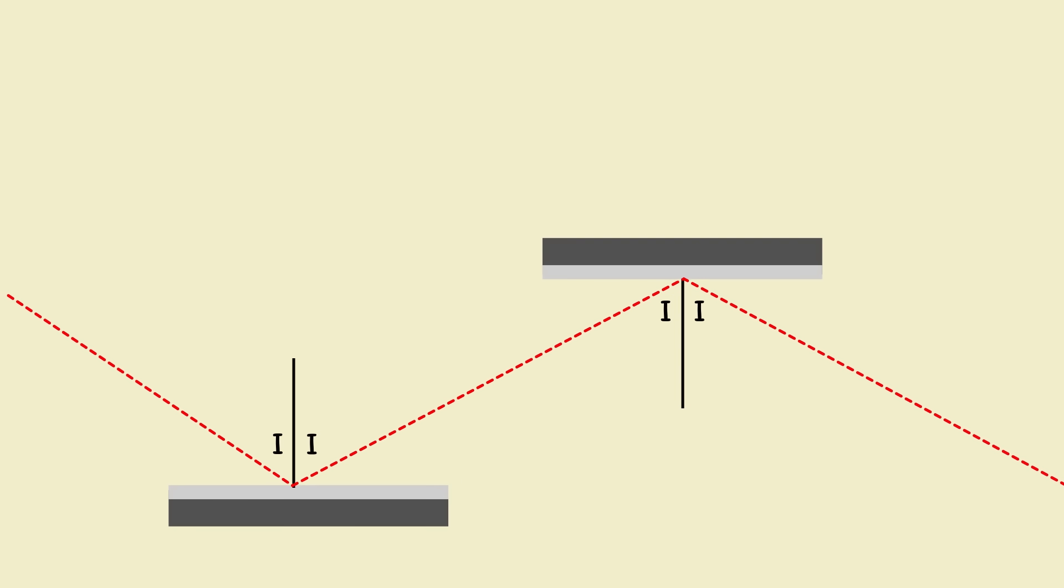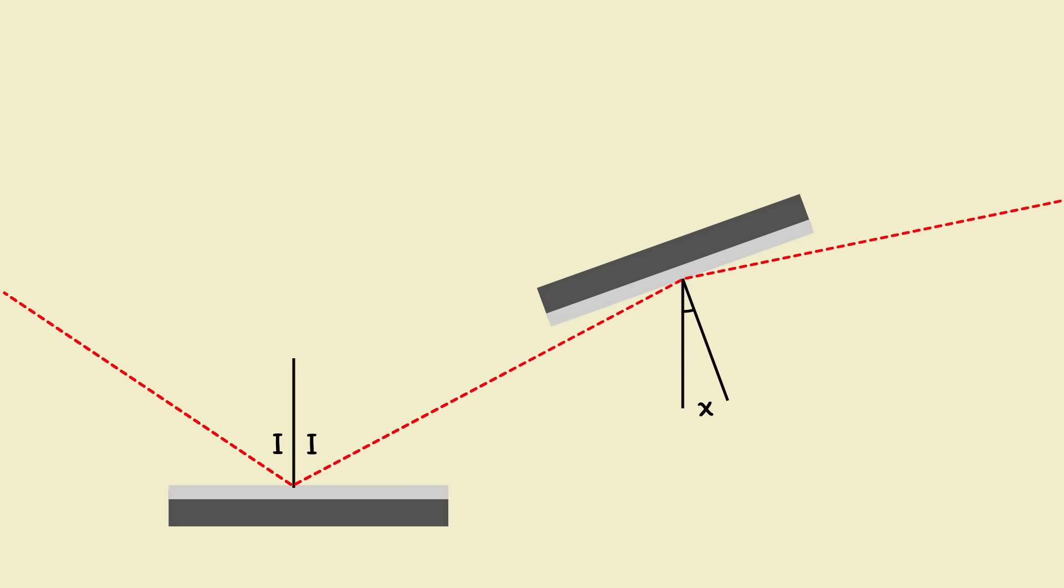But as soon as that second mirror is no longer parallel to the first, an interesting effect occurs. Let's rotate our second mirror now by an angle, which we're going to call X. The ray of light still interacts with the original mirror in the same way. But now, when it hits the second mirror, the angle of incidence has changed. It's now I plus X. And then due to the law of reflection, the angle of incidence equaling the angle of reflection, the angle of reflection here equals I plus X as well.